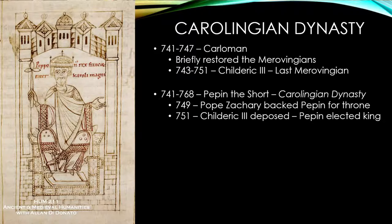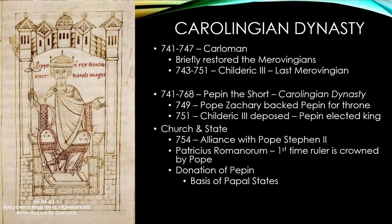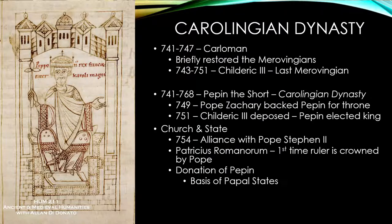This began a church-state relationship that was really important — it had already begun with the conversion of Clovis, but became much stronger under Pepin and his successors. In 754, an alliance formed with Pope Stephen II. Stephen fled to the Franks for aid against his enemies, the Lombards in Italy. What he did in 754 was give Pepin the title 'Patricius Romanorum' — Patrician of the Romans — effectively crowning him with this title. This was really the first instance of a pope crowning a civil ruler.